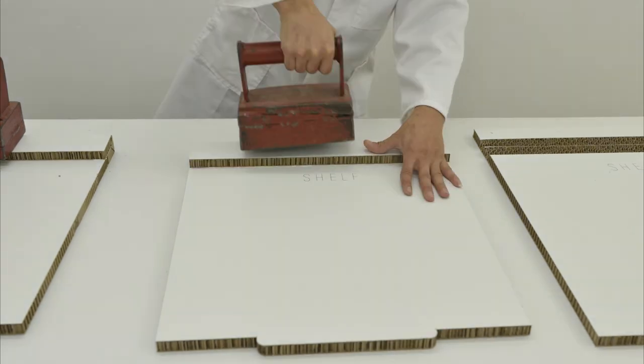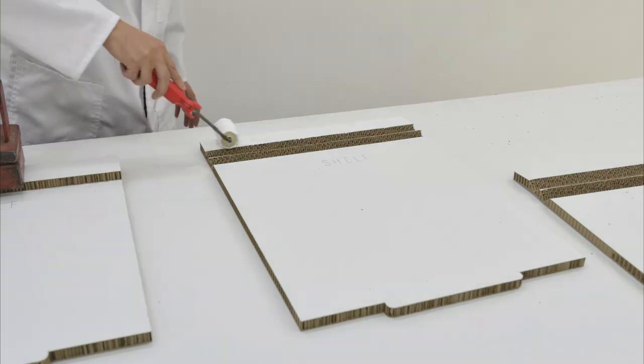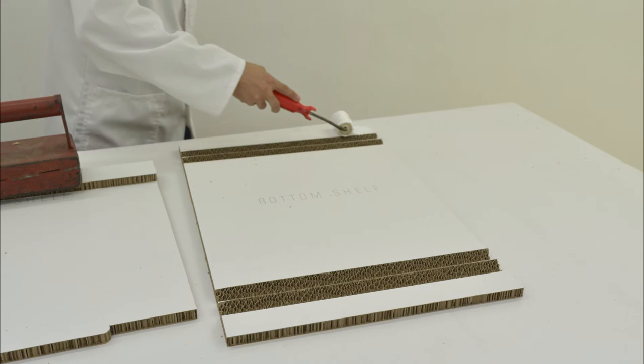The glue we are going to use is simple cold glue, or otherwise known as wood glue. We find it speeds things up if we decant a little into a paint trough and apply the glue with a narrow paint roller like this one.